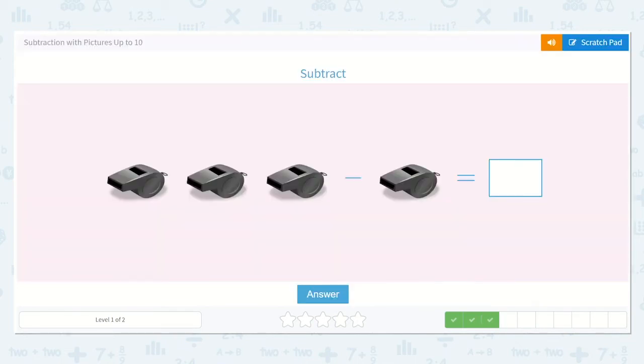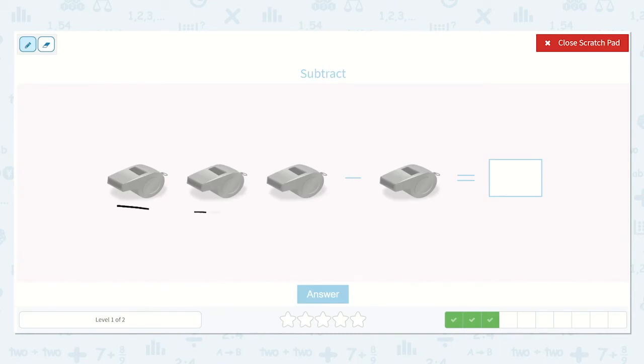Oh, now we have 1, 2, 3. We are taking away just 1. Let's see how many that would be. We have 1, 2, 3. We are taking away 1 of them. How many do we have left? I see 1, 2. So, our final answer is 2.